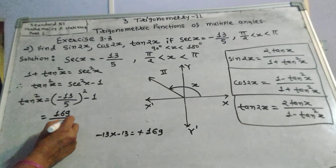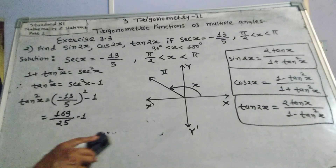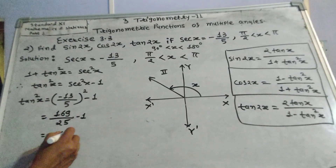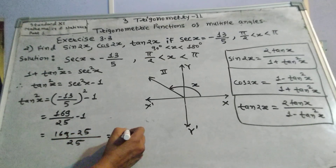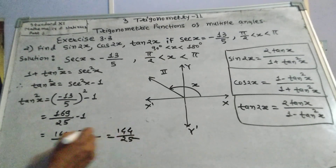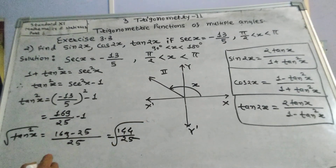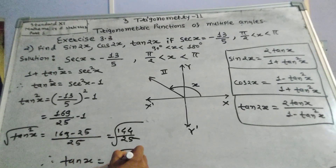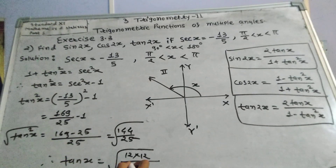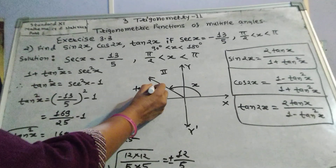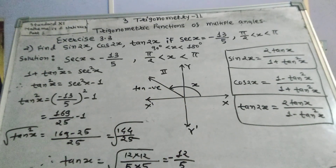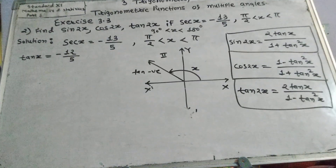169 divided by 25 minus 1. Performing cross multiplication: 169 minus 25 times 1, which is 169 minus 25 equals 144, divided by 25. Therefore tan²x equals 144 upon 25. Taking square root of both sides, tan x equals 12 upon 5. Since 12 squared is 144 and 5 squared is 25, we get tan x equals positive or negative 12 upon 5. But angle lies in second quadrant and in the second quadrant tan is negative, therefore tan x equals negative 12 upon 5.